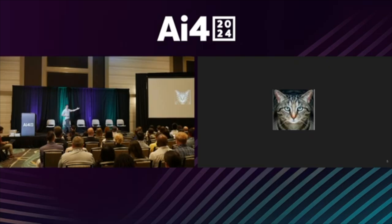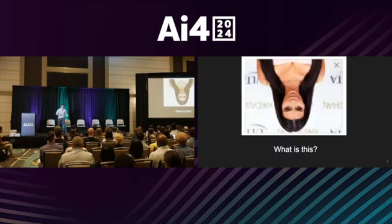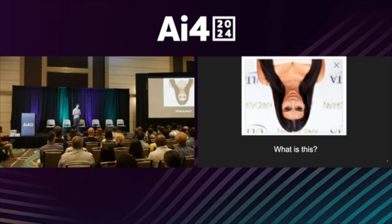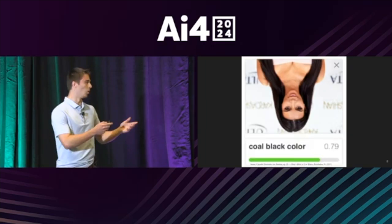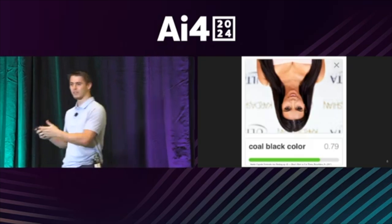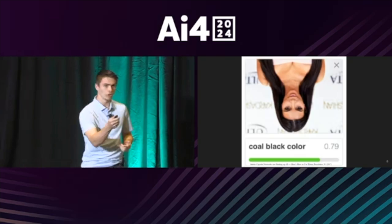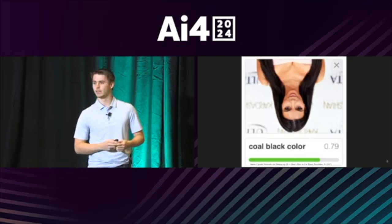Now, what is this? A cat. And this? What about this one? You say it's Kim Kardashian upside down, but the AI says it's actually coal — black coal — with nearly 80% confidence. Why were you able to get it right, but the AI didn't?